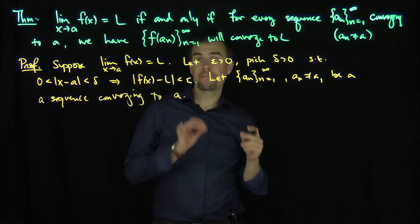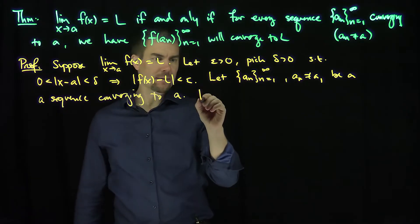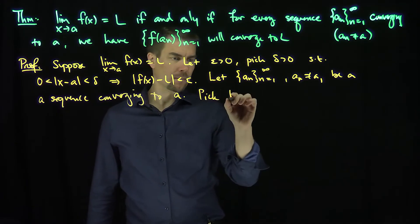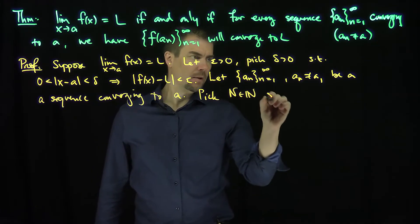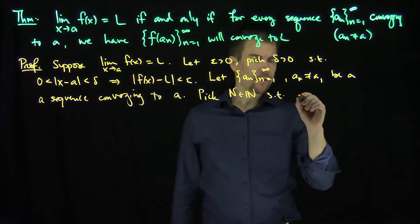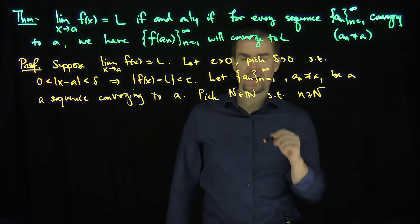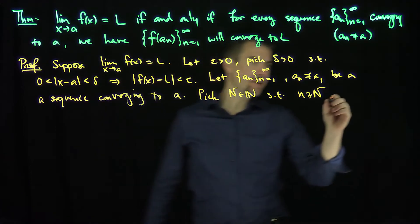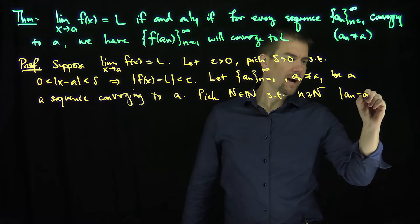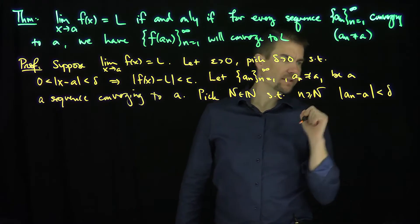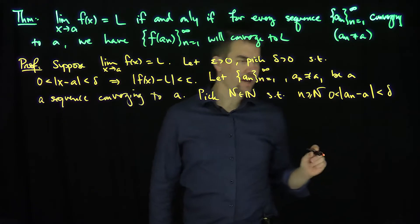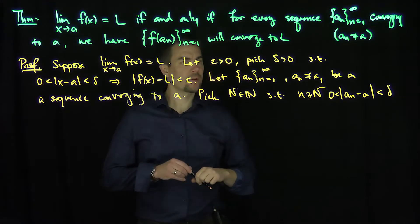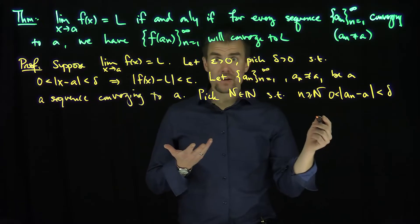Now, since it converges to a, I can find an N. Pick N, an N, such that if n is bigger than or equal to this N capital, we have our sequence |aₙ - a| is less than delta, and of course it would be greater than zero since the aₙ are not equal to a.